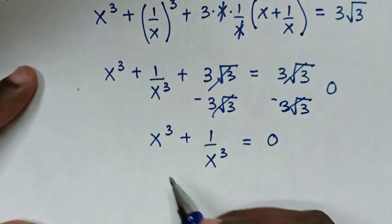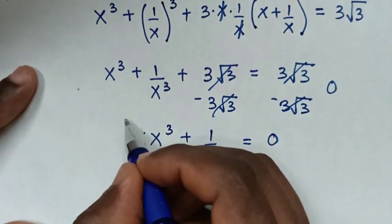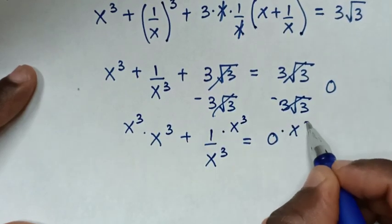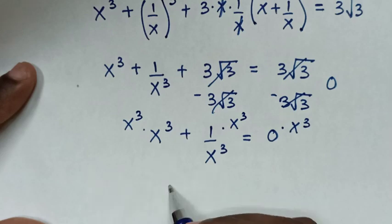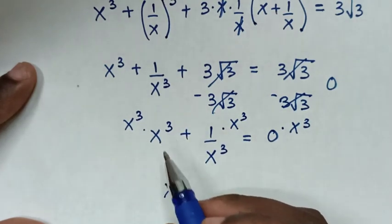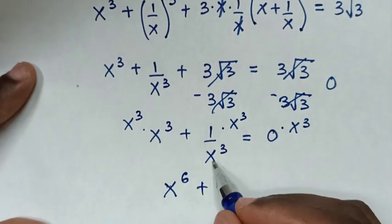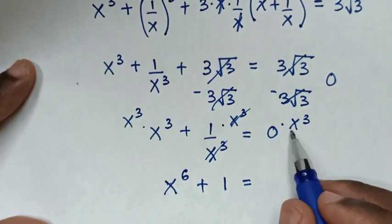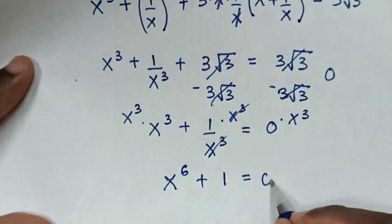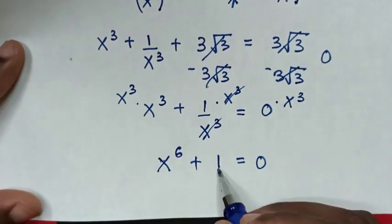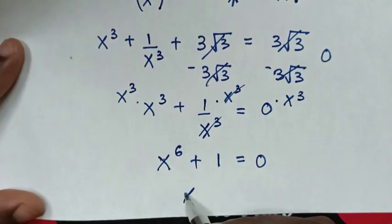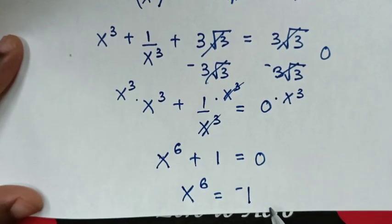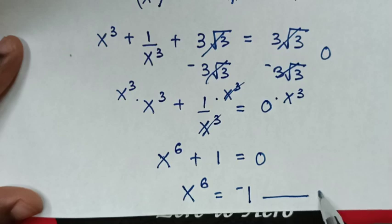Then in the next step, we'll multiply both sides by x cubed. So this and this with the same base of x gives x cubed plus 3 equals x to the power 6. Then this and this will cancel, leaving x to the power 6 plus 1 equals 0. We take 1 to the right side, so x to the power 6 equals negative 1. We'll call this equation 2.